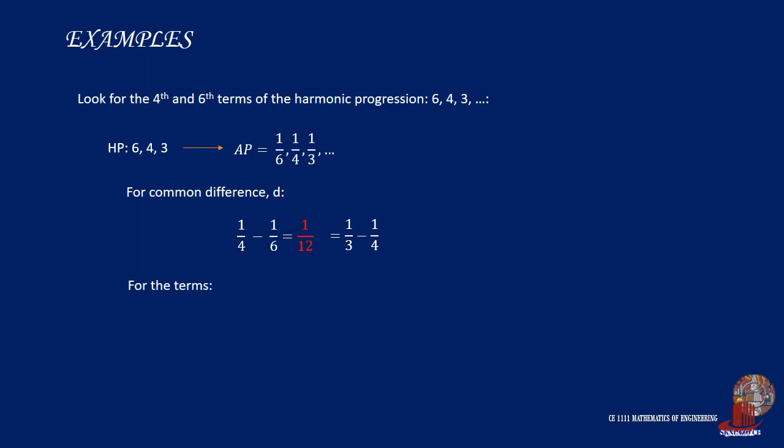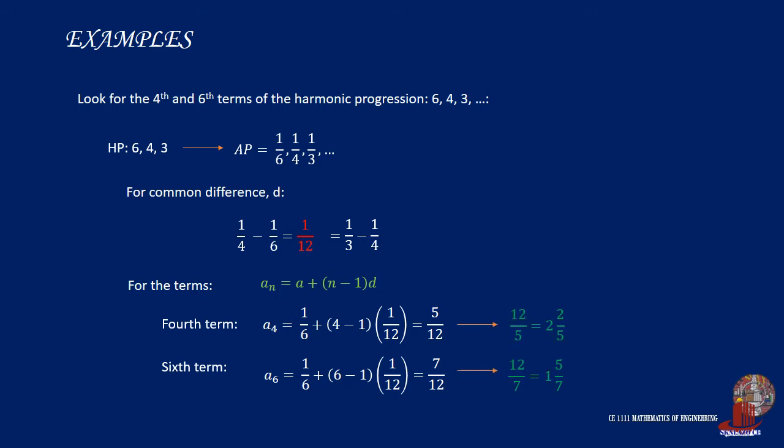After learning about the value of the difference, use the formula for arithmetic sequence to find the values of the terms desired. In computation, the fourth term of the arithmetic progression is 5 twelfths, and the sixth term is going to turn out as 7 twelfths. Finally, take the reciprocals to obtain the harmonic terms 12 over 5, or 2 and 2 fifths, and 12 over 7, or 1 and 5 sevenths.